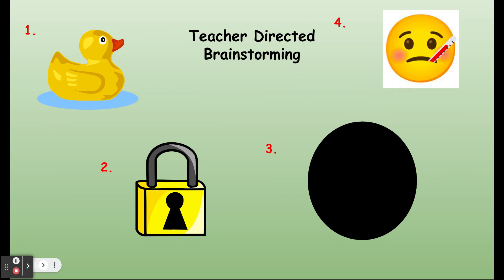Let's do some teacher directed brainstorming. Look at picture number one. What is that a picture of? You got it. It's a duck. What about picture number two? Yes! Lock. All right, now what about picture number three? Yes! Black. And picture number four. Sick. Excellent!